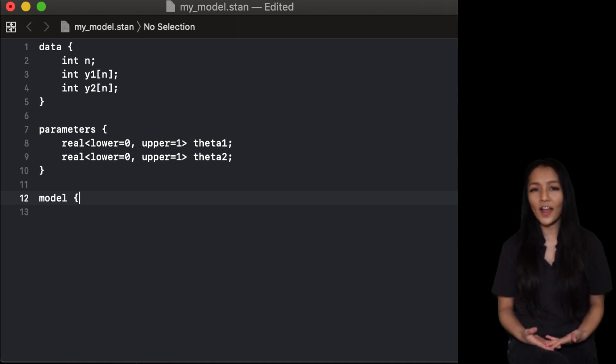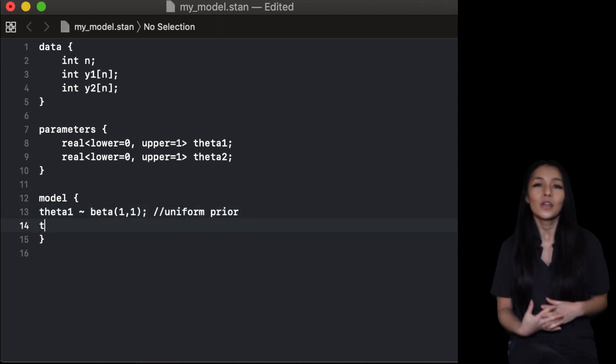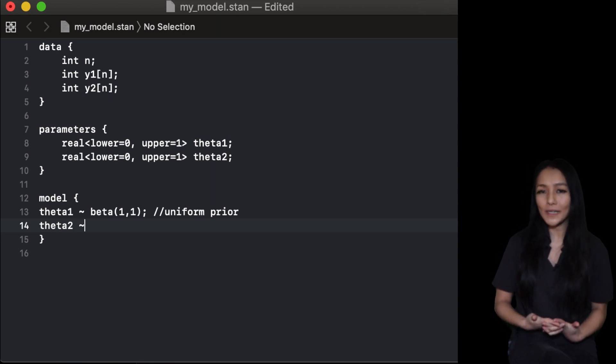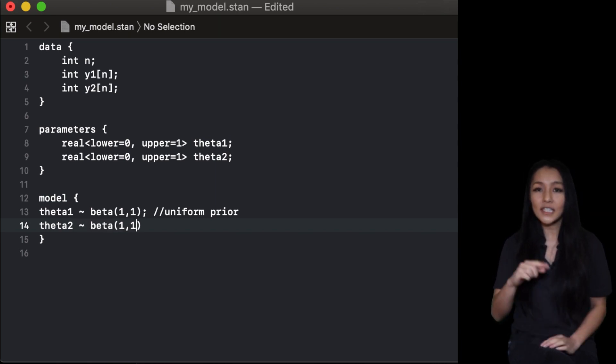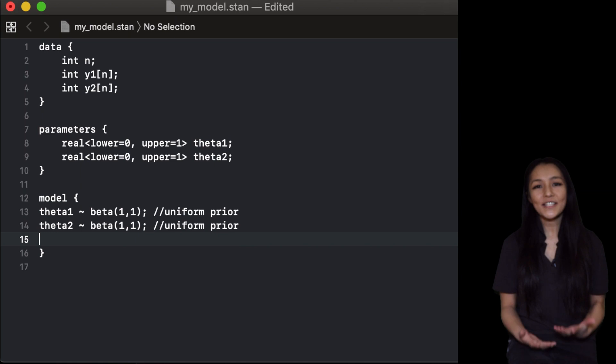In the model block, we need to define the prior on our parameters. If we don't, then it will default to an unbounded uniform distribution. Here, since we're not so sure on what the click-through rate should be, we choose a beta(1,1) distribution. This is the same as a uniform between zero and one distribution. The tilde sign means that theta is distributed as beta(1,1), or sometimes said as theta is drawn from a beta(1,1) distribution.